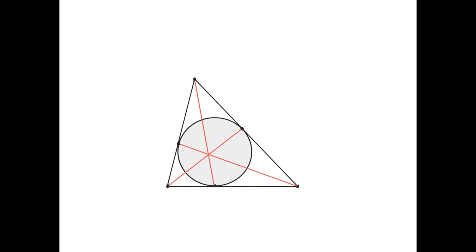Then, if we connect each vertex of the triangle with its corresponding tangency point on the other side, do these three segments always intersect at one point?